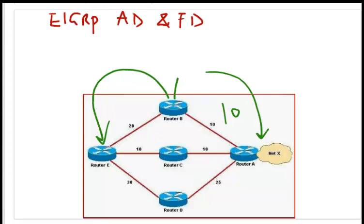Feasible distance means the best calculated distance of a router to a particular destination based on the AD of the neighbor and the cost of its link to that neighbor.